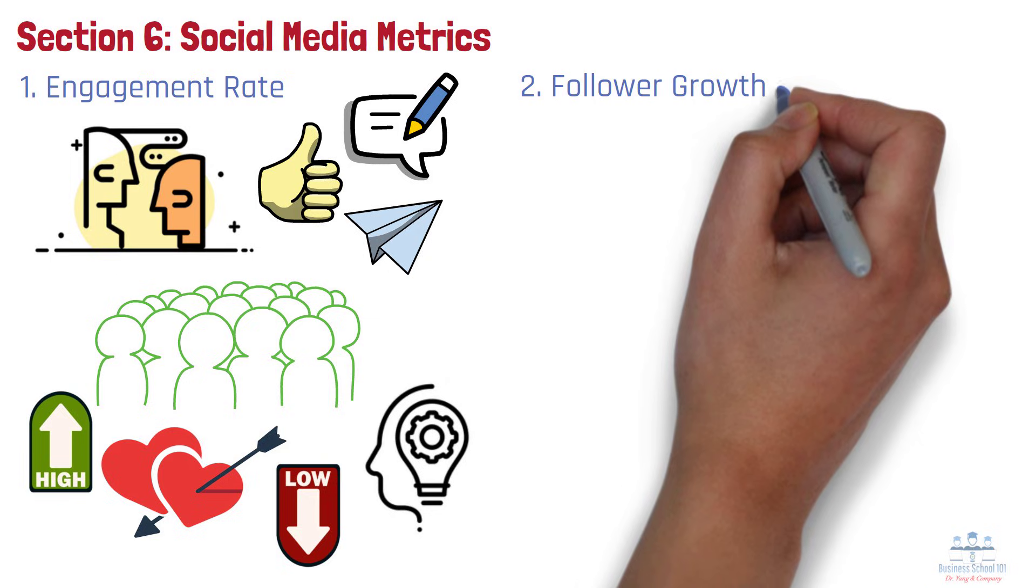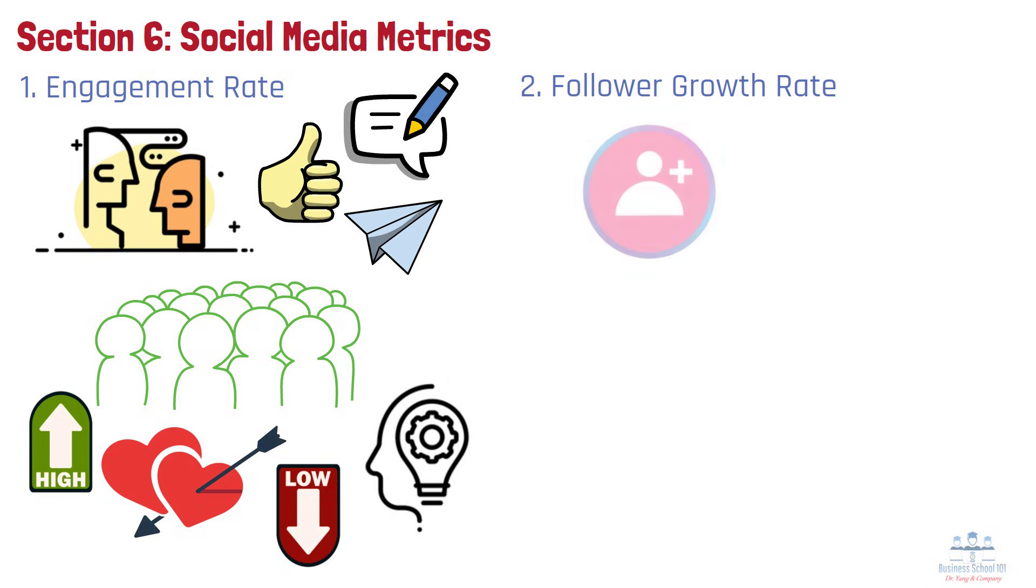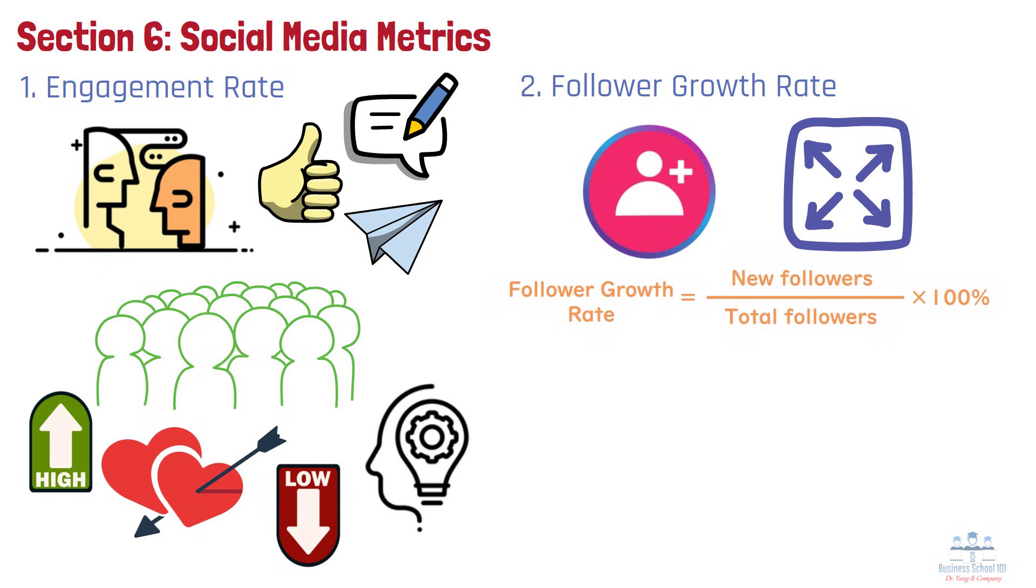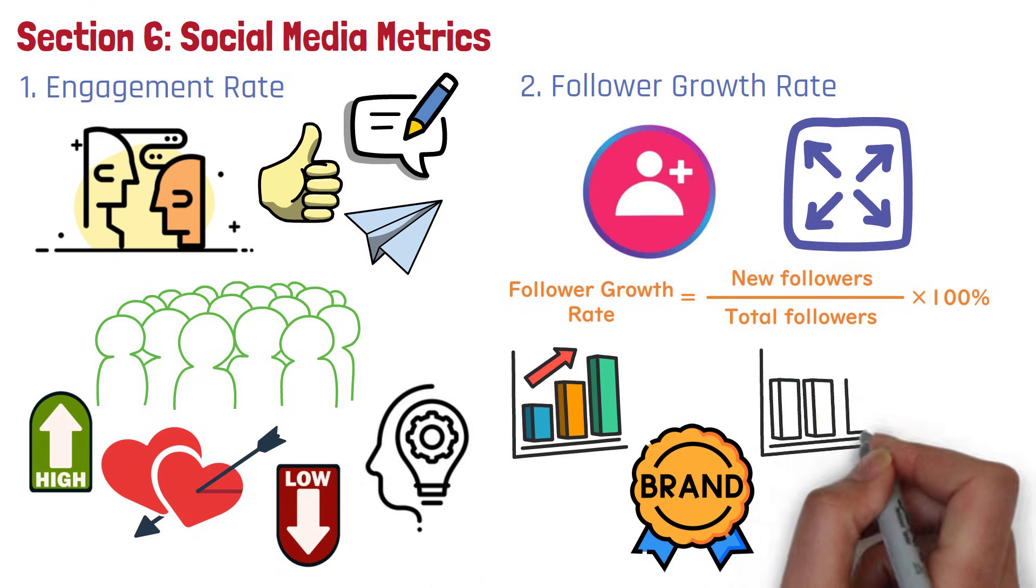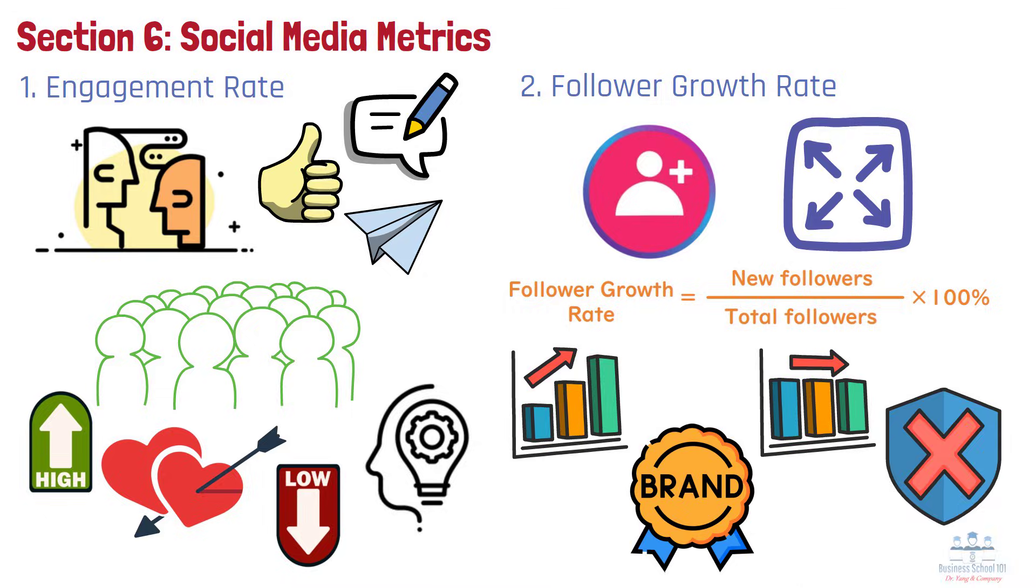Number 2. Follower Growth Rate. It shows how quickly your social media following is expanding. It's calculated by dividing new followers by total followers and multiplying by 100. Steady growth indicates increasing brand awareness and interest, while stagnation could be a red flag for your content strategy.